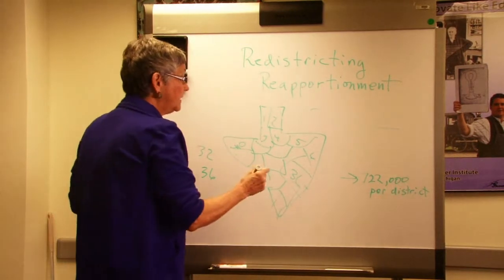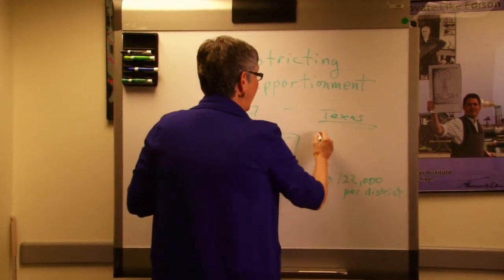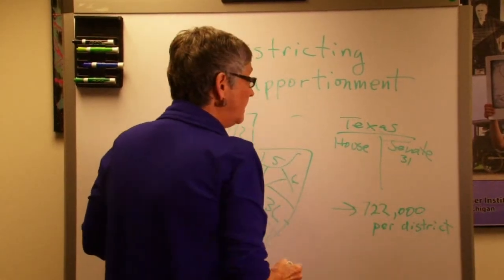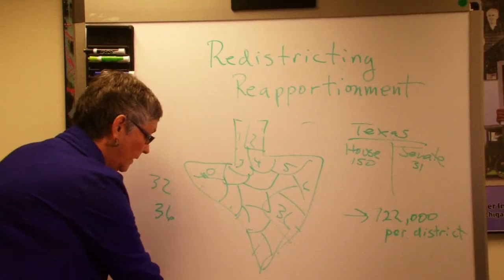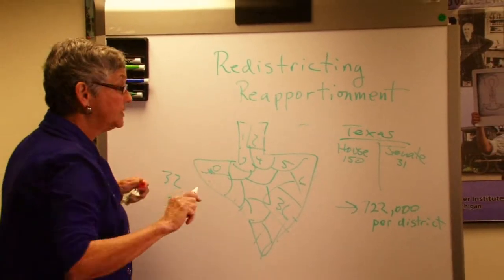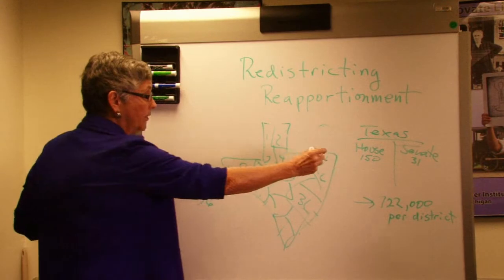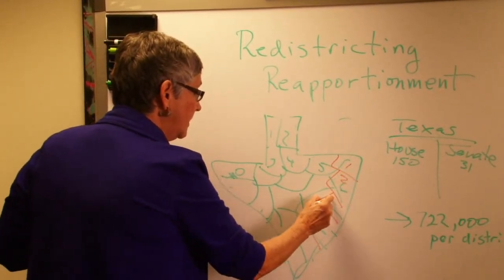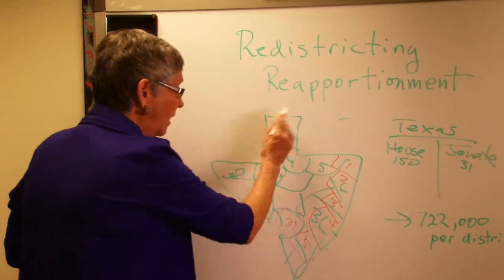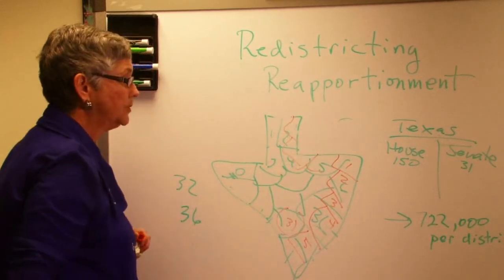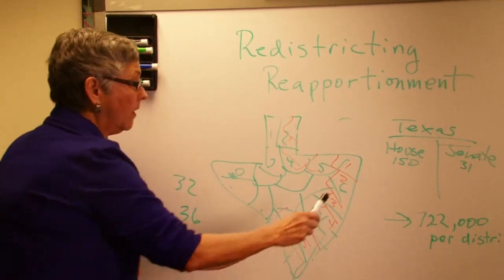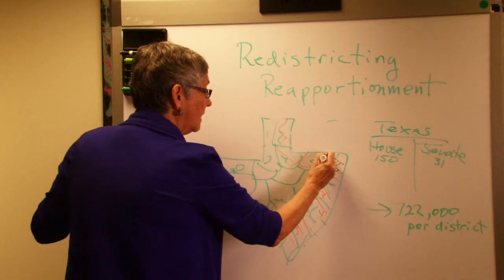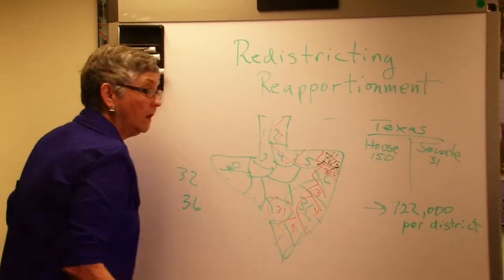Texas also has a House of Representatives and a Senate in Austin. In the state Senate there are 31 members, and in the state House of Representatives in Austin there are 150. The state legislature also has to draw districts for 31 state Senate districts — district 1, 2, 3 through 31 — filling the whole state. In addition, there are 150 House districts, so the state legislature has to draw 150 little House districts as well.